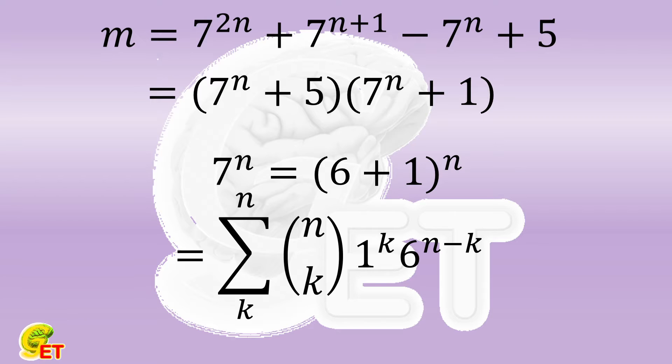If we bring it into the first factor, except for the term of 1 to the power of 1, all the other terms are divisible by 6, and 1 plus 5 is also divisible by 6. So the first factor is divisible by 6.